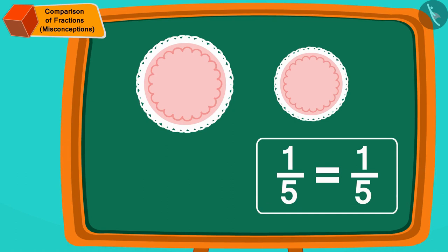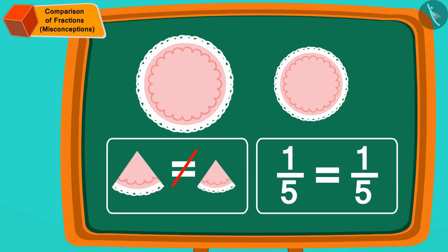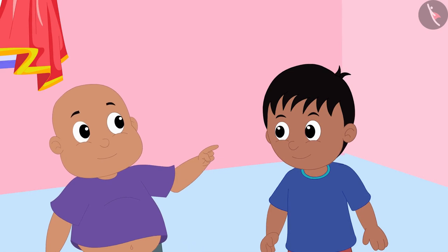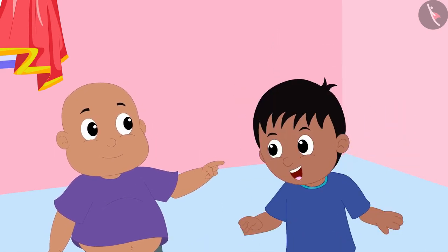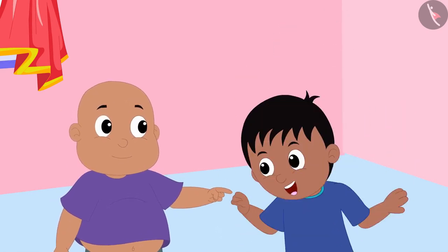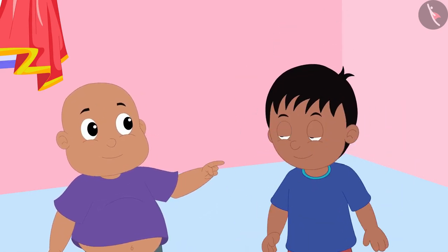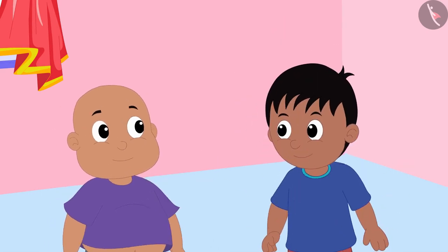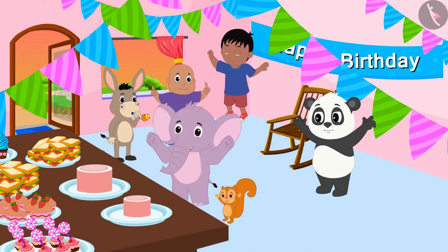Children, remember that even if the fractions of the parts of two objects are the same, but if the quantity of those objects is not equal, then those parts will not be equal. When Babloo explained this to Rajoo, Rajoo jumped with joy that he got more cake than Babloo.